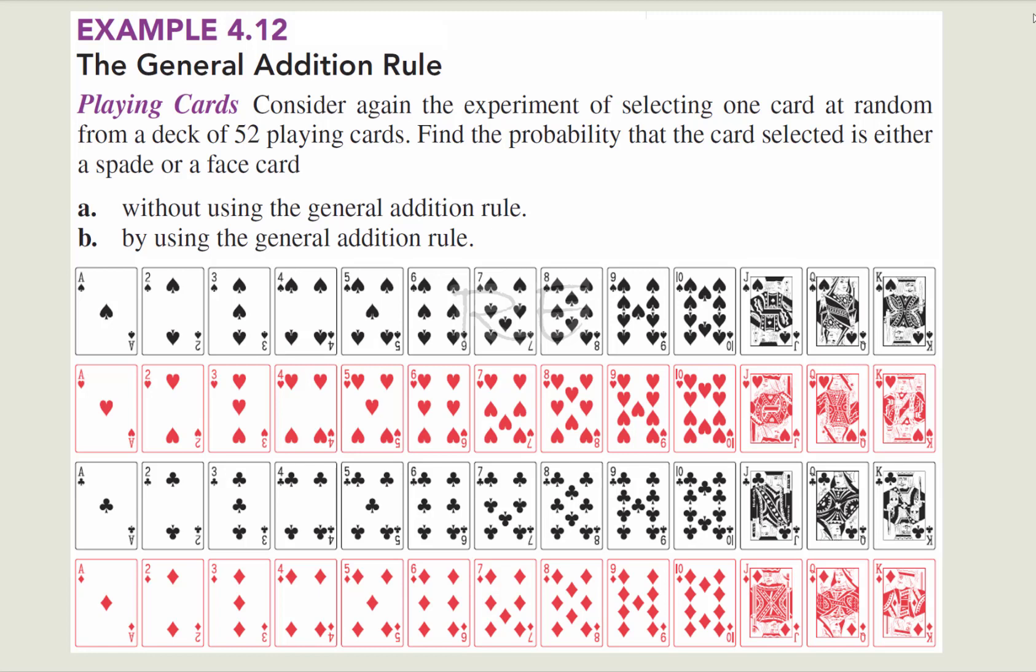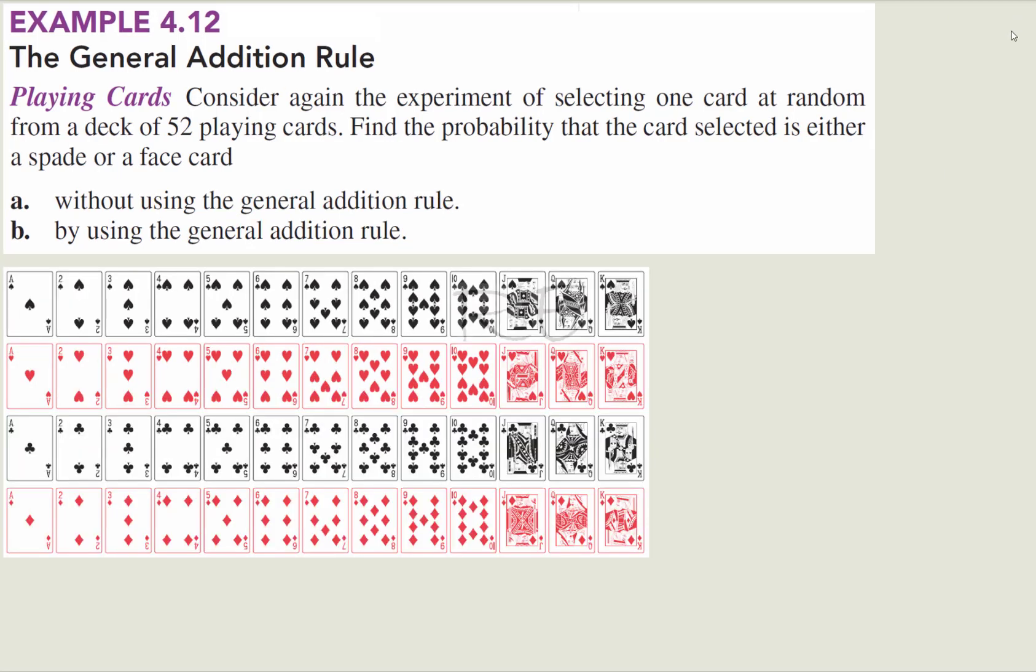If one card is selected at random out of a deck of 52 playing cards, we need to find the probability that the selected card is a spade or face card. First, without using the General Addition Rule.